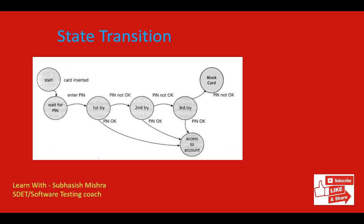If you have to write test cases for this system, the first test case is: insert the card, enter the correct PIN, gain access to the account. The second test case: insert the card, enter the wrong PIN three times, and the card gets blocked. The third test case: enter the wrong PIN the first time, then the correct PIN the second time, and gain access. The fourth test case: enter the wrong PIN twice, then the correct PIN on the third attempt, and gain access. This way you cover all different states.